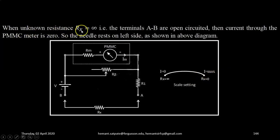When unknown resistance Rx is infinite, that means between A and B nothing gets connected, the terminals A and B are open-circuited, then the current through PMMC meter is 0. So the needle rests on left side, as shown in the above diagram.